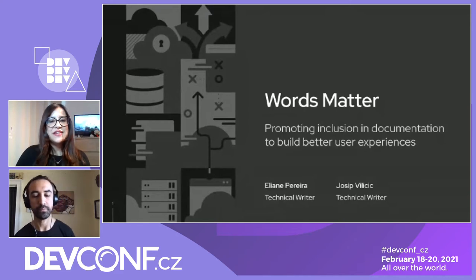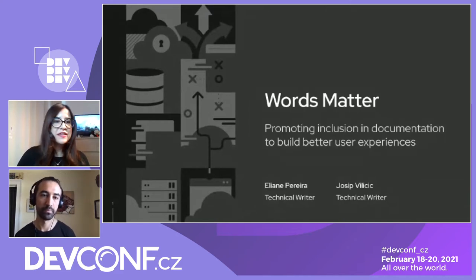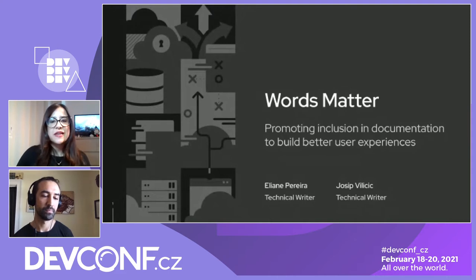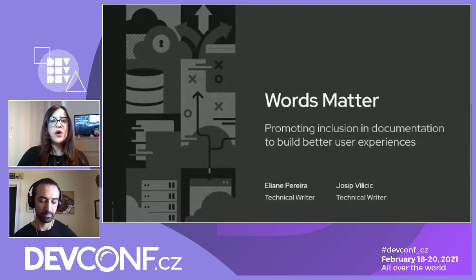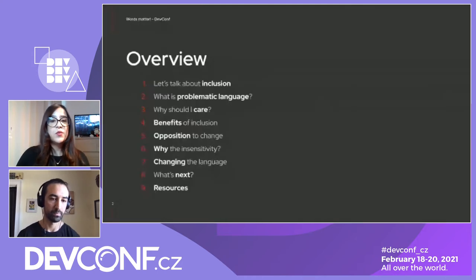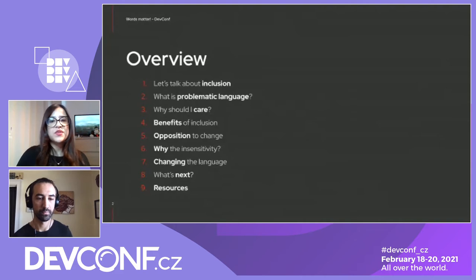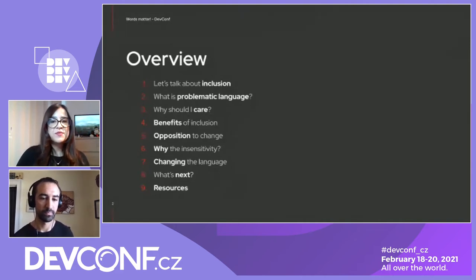Today we're going to talk about inclusion, what is problematic language, why you should care about problematic language, what are the benefits from promoting inclusion in our documentation and projects, what kind of opposition we may face when trying to change things, and why you may find insensitiveness when trying to make the changes. Then we're going to discuss a possible path for adopting inclusive language, what are the next steps, and share some resources if you're interested in learning more about inclusion.